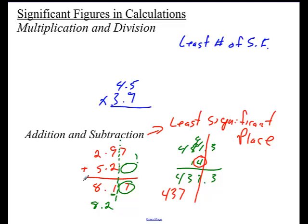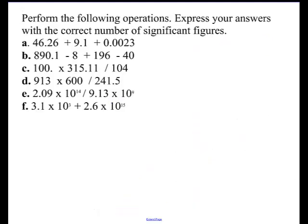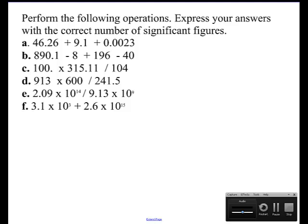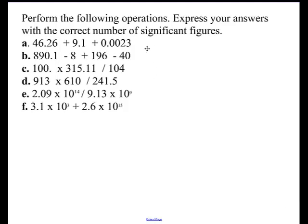Let's do some practice. Pause the video and see how you do. When I add those three numbers, my calculator gives 55.3623. Since we're adding, we look at the least significant place: one value goes to the ten-thousandths, one to the ones, one to the hundreds. I can only report to the ones — wait, the least precise is the ones. Cutting off at that point, I'm cutting off a 6, so I round up: the answer is 55.4.